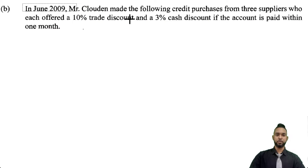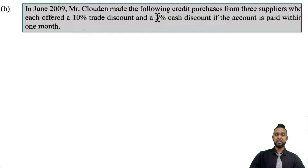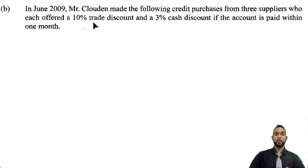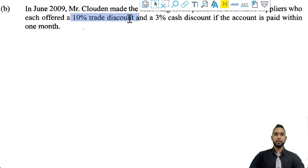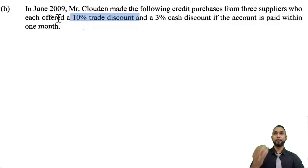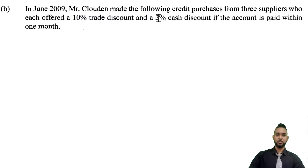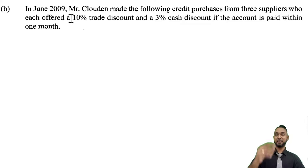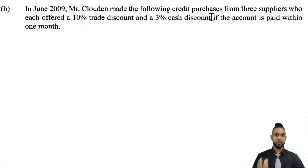Let's take a look at Part B. In June 2009, Mr. Cloud made credit purchases from three suppliers who each offered a 10% trade discount and a 3% cash discount if the account is paid within one month. This is an important distinction: trade discount and cash discount are not the same. Trade discount is given at the point of purchase — a reward for buying in bulk — and is not recorded in the books; it's deducted on the invoice and the net amount is used for double entry. Cash discount is given to encourage early repayment, and must be recorded.